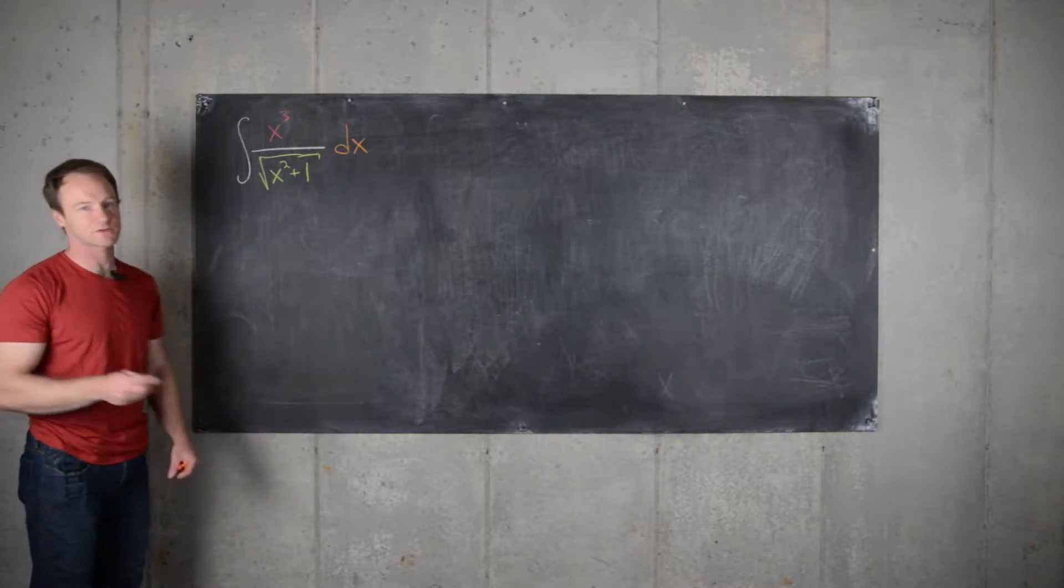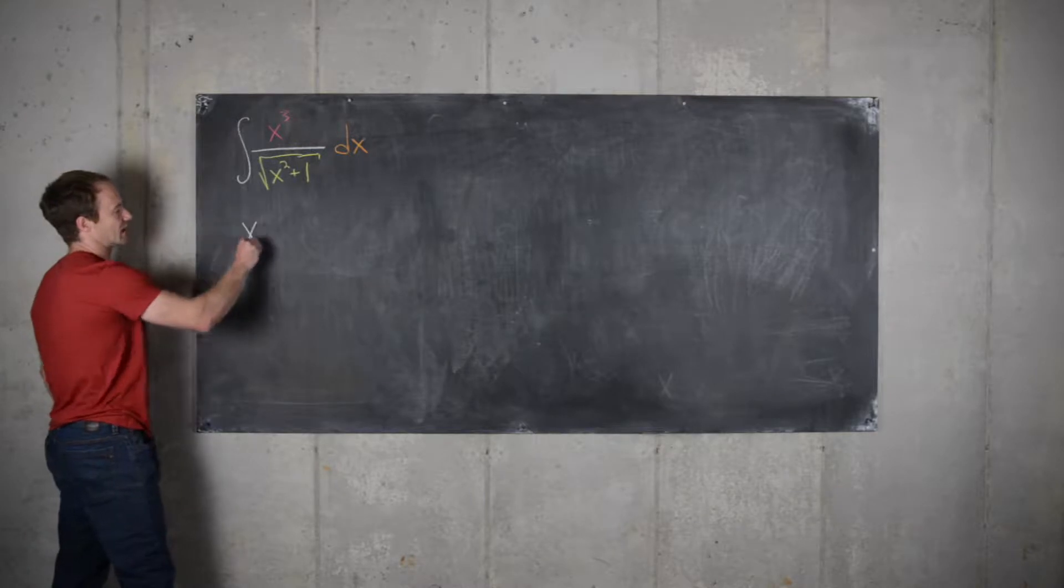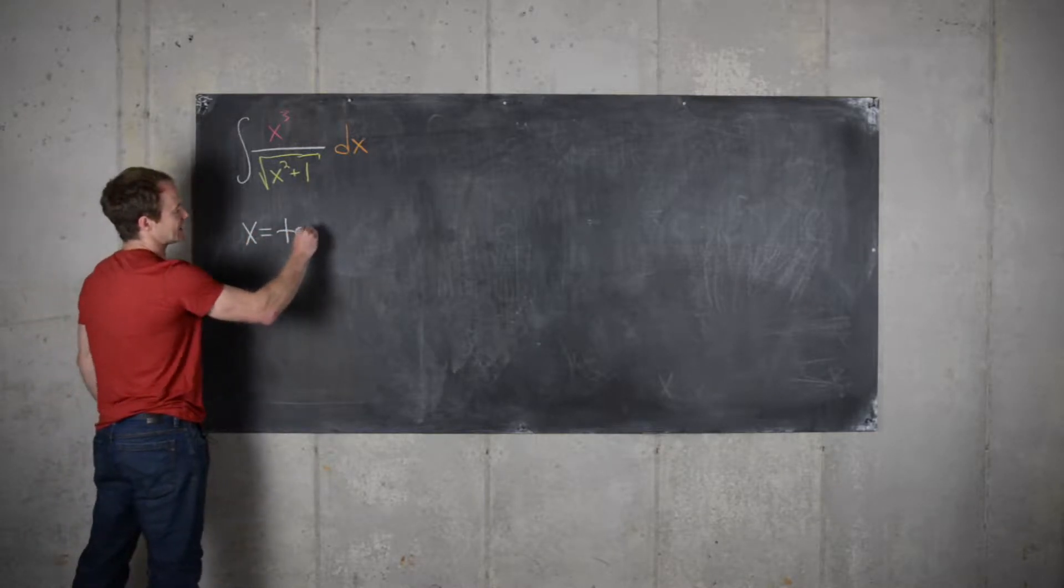We see something of the form square root of x squared plus 1, so that tells us that we're going to let x equals tangent theta.